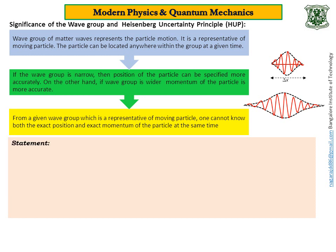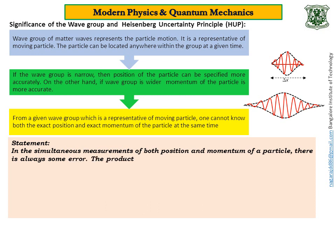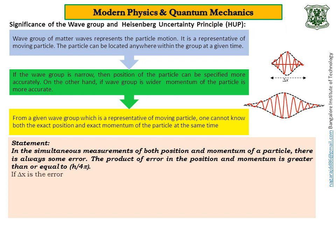This concept led to the formulation of Heisenberg's uncertainty principle, and the statement goes like this: in the simultaneous measurement of both position and momentum of a particle, there is always some error. The product of the error in position and error in momentum is greater than or equal to h by 4 pi. This is considered one of the fundamental laws in quantum mechanics. Mathematically, if delta x is the error in position and delta p is the error in momentum, then delta x times delta p is greater than or equal to h by 4 pi.